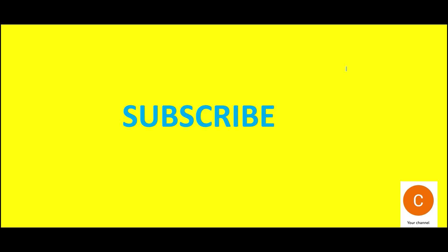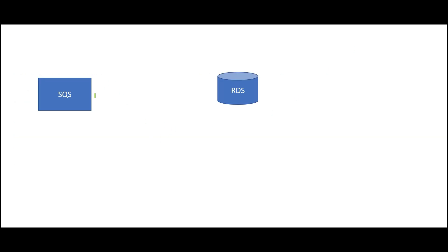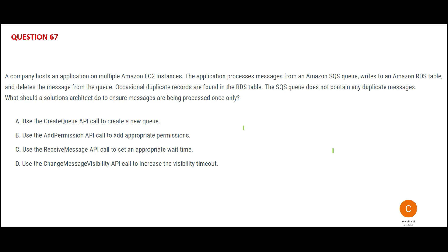These are all real certification questions on cloud. This channel is dedicated to help you clear cloud certifications, primarily Azure, AWS, and Google Cloud. So if you look at this question, it is a very simple question. You have SQS and the data is coming in, and RDS is your consumer. What is happening is SQS does not have duplicates, but RDS somehow is getting duplicates — we have to solve this problem.